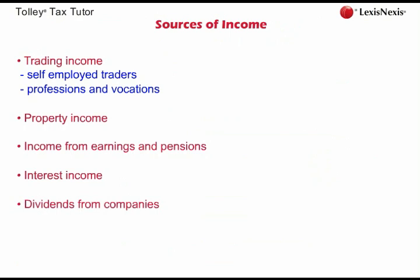Dividend income needs to be kept separate from other types of investment income because it has different rates of tax applied to it. These are the two main types of savings and investment income, but there are some others which we will explain more about later in this course.